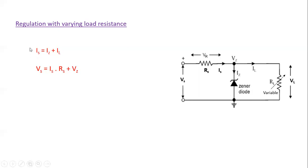IS is constant because VS is a constant, so IS also should be a constant. If VS is constant and VZ is constant, the current IS must remain constant. So when IL varies, since IS is constant, only IZ can vary.